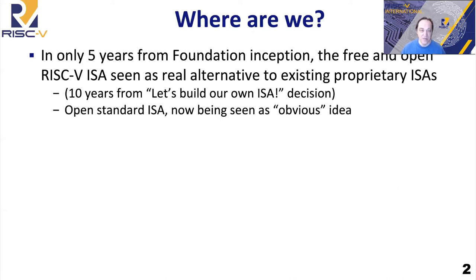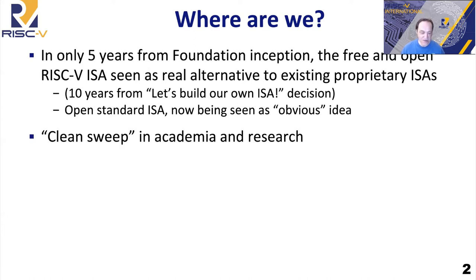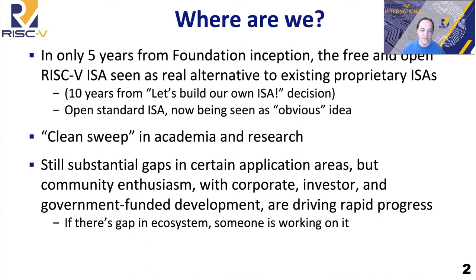Already, people view the idea of a free and open RISC-V ISA as a real alternative to existing proprietary ISAs. I remember when we started pushing the idea out, a lot of people said there's no way you can have an open standard ISA be the basis of what happens in industry. That's kind of flipped around now — people see it as an obvious idea, and you see other ISAs trying to adopt the same model. In academia and research, we see RISC-V being widely adopted — basically a clean sweep.